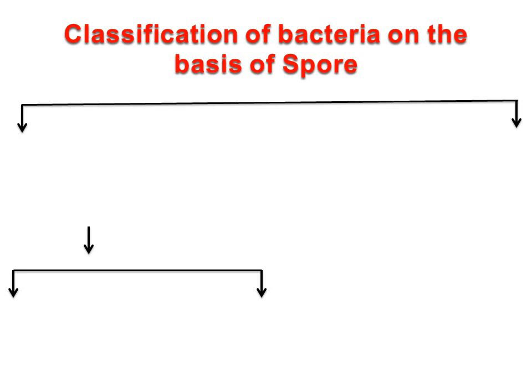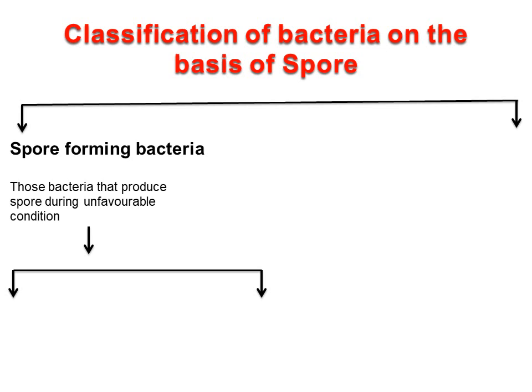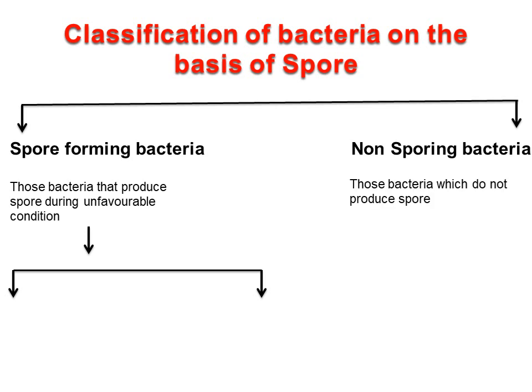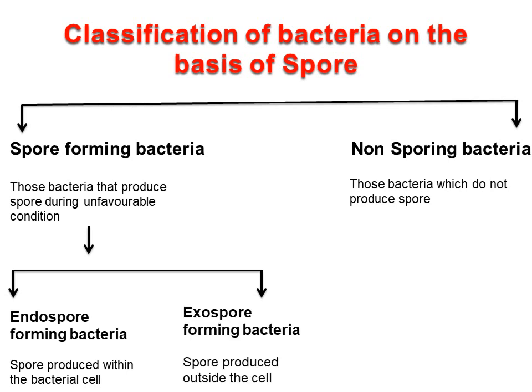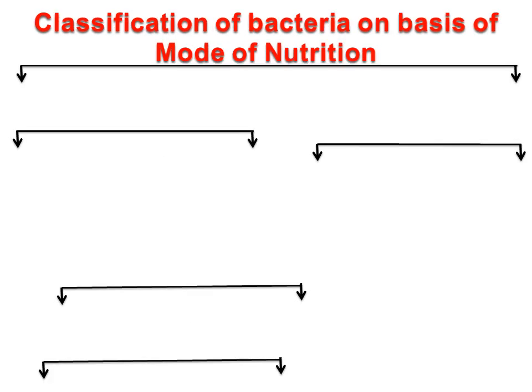Classification of bacteria on the basis of spore: spore-forming bacteria are those that produce spores during unfavorable conditions, and non-sporing bacteria are those which do not produce spores. Spore-forming bacteria are further divided into two groups: endospore-forming bacteria, which produce spores within the bacterial cell, and exospore-forming bacteria, which produce spores outside the cell.